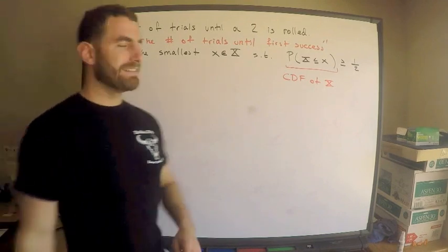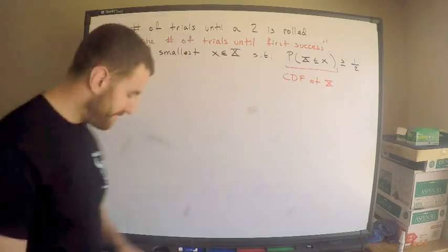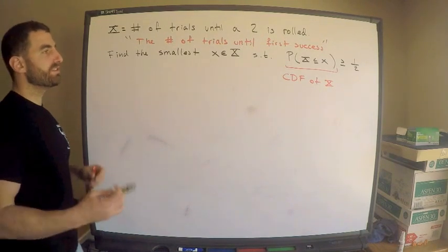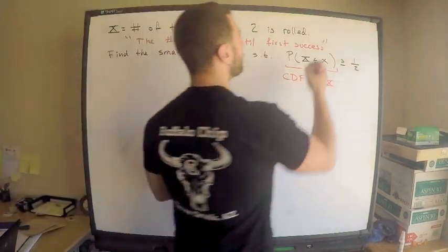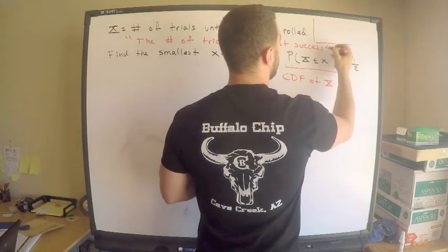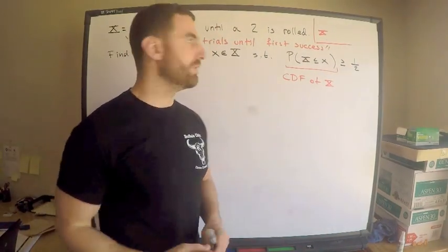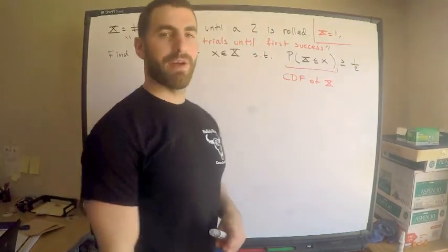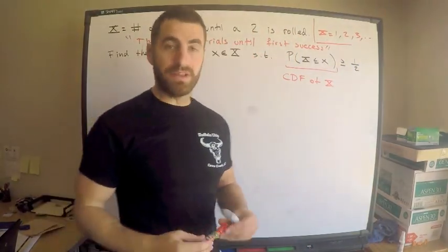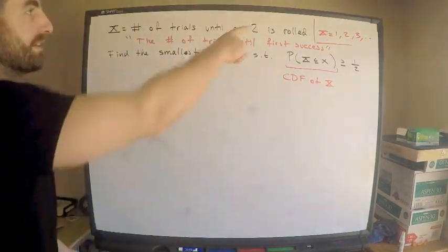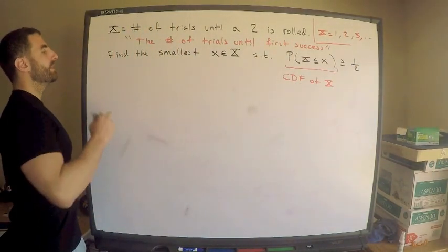Let's take baby steps and arrive at what distribution this is. First, what values can X take? Well, I need at least one roll to get a two, so X could be one, two, three, or theoretically a million rolls. Those are the values my random variable X can take on.